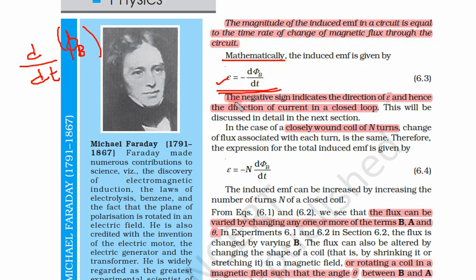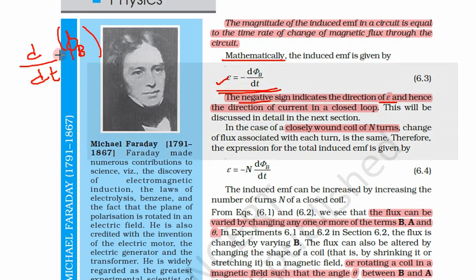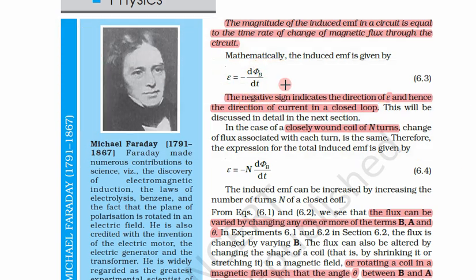There is a negative sign in the formula: ε = −dΦ_B/dt. The negative sign indicates the direction of epsilon and hence the direction of the current in a closed loop. We will discuss later why there is this negative sign, but it gives us the direction of the induced EMF.